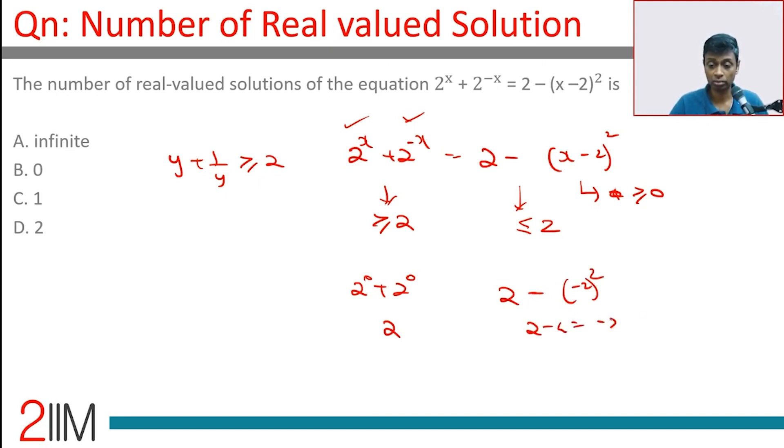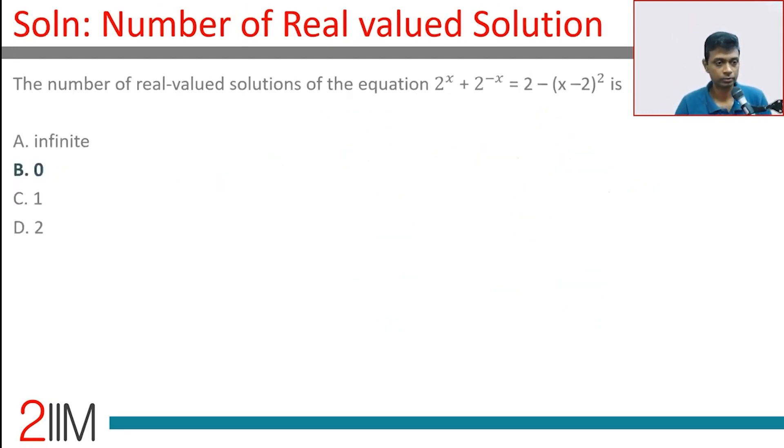This will go to 0 when x is 2. At that time this is not 0. So there is no case where this is equal to 2 and this is equal to 2. We will have 0 real valued solutions.